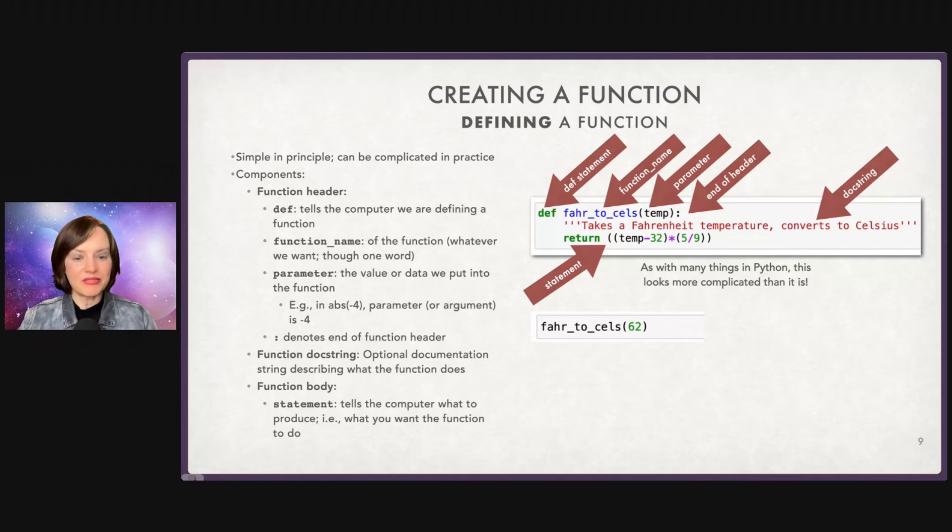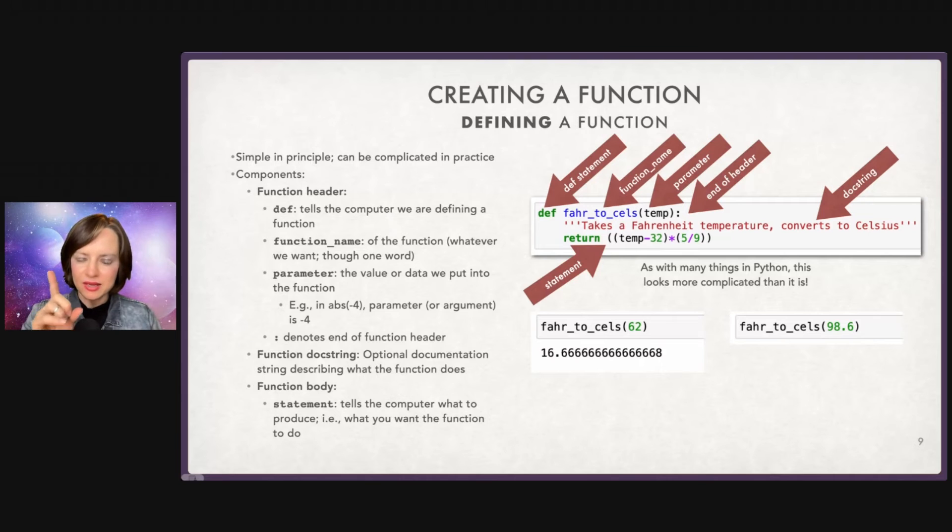So now I can use my function by just writing in my code, fahr_to_cells 62, and I will get 16.6 repeating. Those of you in countries that use Celsius, tell me if that seems like it makes sense. 62 is like pretty nice out. I can try it again. Fahrenheit to cells. That's apparently the temperature of the human body, though I read recently that that's not. I think there's more variation. 37. Is that the temperature of the human body, according to your understanding, rest of the world? Sound off in the comments.